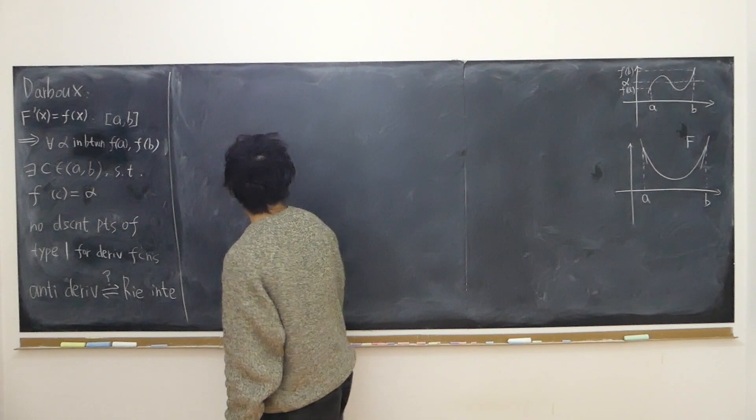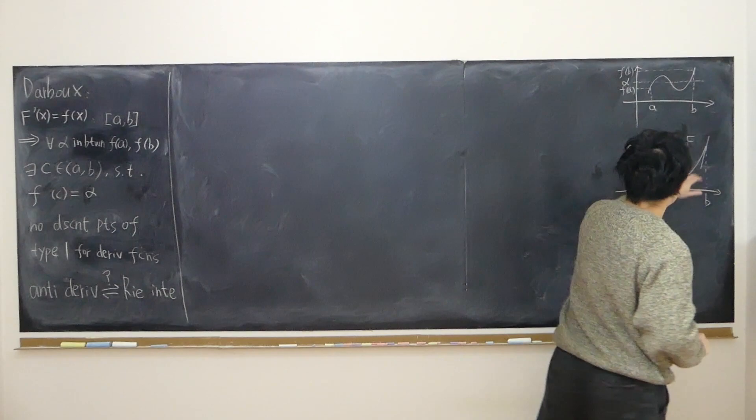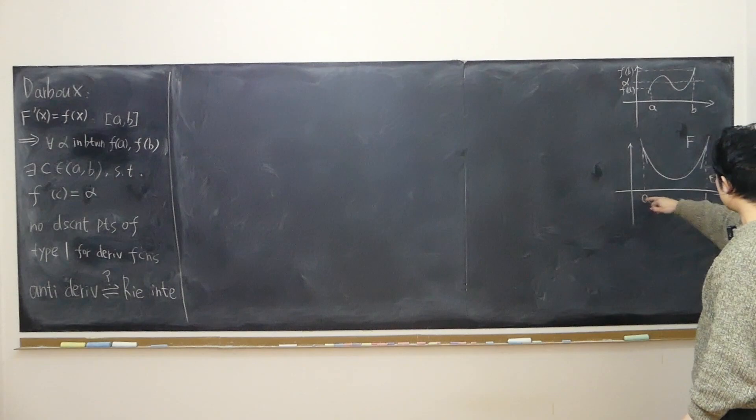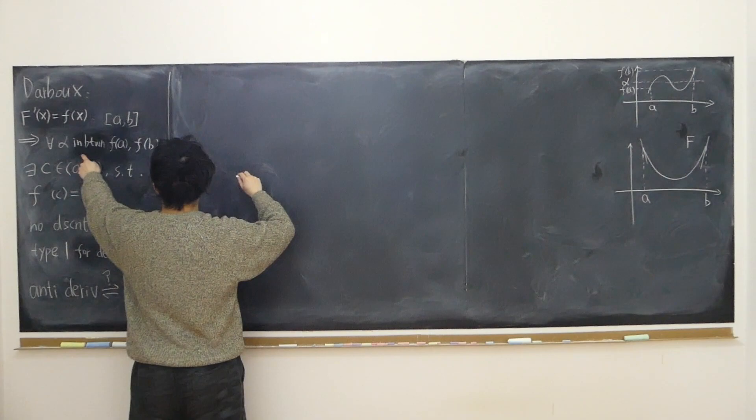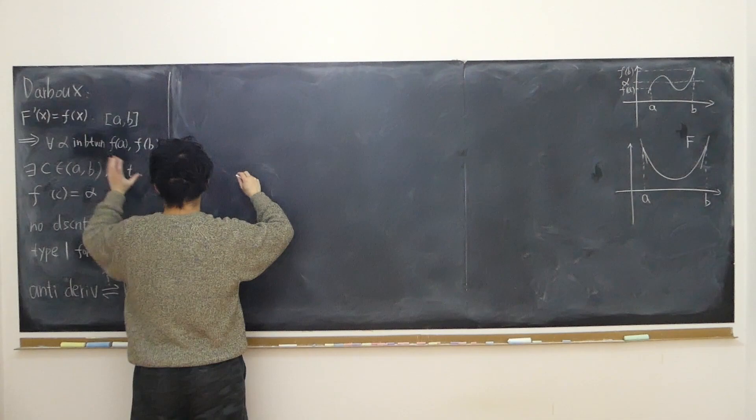But first, let me use this graph. Let's say this is the graph of capital F, with point A and point B, and a tangent line at B. Here alpha is the general case. Now I'm going to consider a special case where alpha is equal to zero. So capital F'(x) equals little f(x) over the interval [a, b].